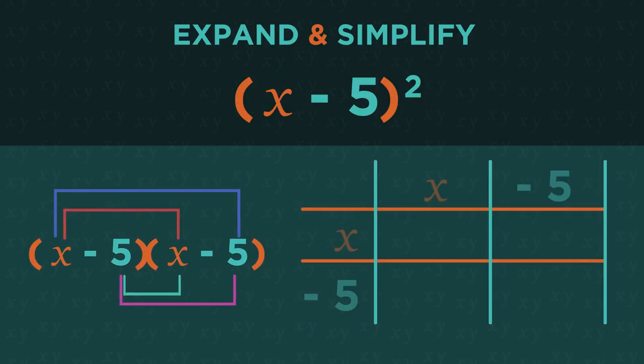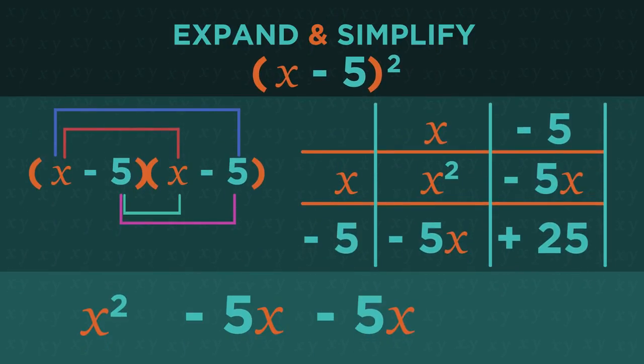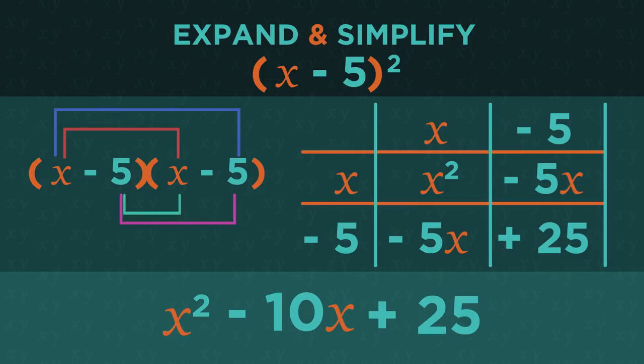So one of these methods: x squared minus 5x minus 5x plus 25, and simplify so the final answer is x squared minus 10x plus 25.